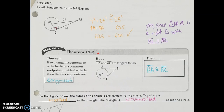For the next question, we need to determine whether ML is tangent to circle N — essentially, do we have a right angle there? We test this by checking if the sides satisfy the Pythagorean theorem. If 7² + 24² equals 25², that would be a Pythagorean triple, confirming a right triangle. Testing: 7² + 24² = 49 + 576 = 625, and 25² = 625. Since A² + B² = C², it is a right triangle, meaning NL and ML are perpendicular, so ML is tangent to the circle at point L.